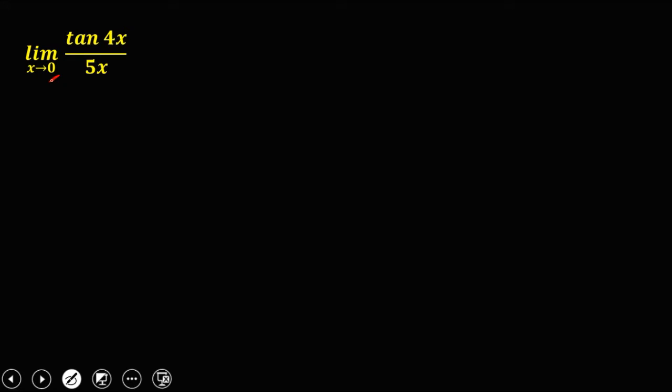Using direct substitution, this becomes tangent 4 times 0 over 5 times 0. Tangent 0 is equal to 0 over 5 times 0, which is also equal to 0. Therefore, using direct substitution, this limit becomes indeterminate. So we cannot solve this limit using direct substitution.